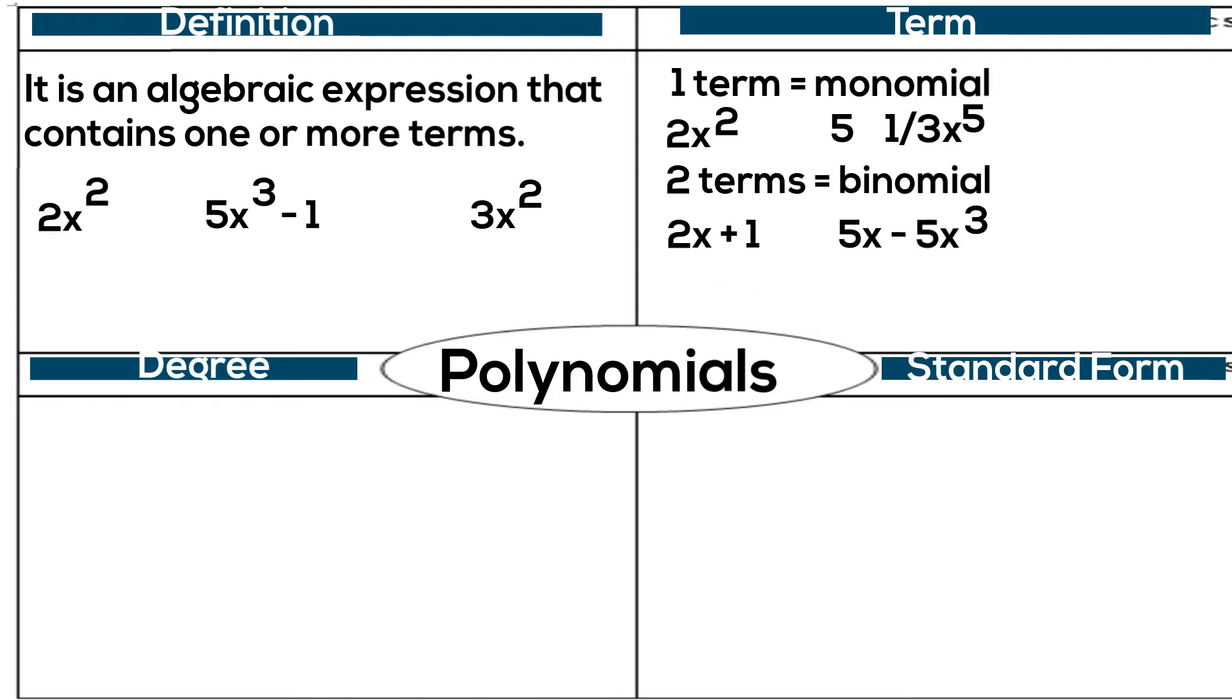The last polynomial that we will look at is one with three terms, or a trinomial. Some examples include 1 third x squared minus 5x plus 1.